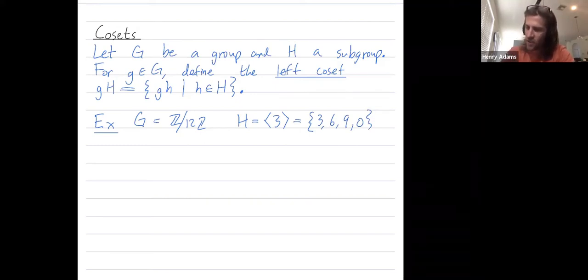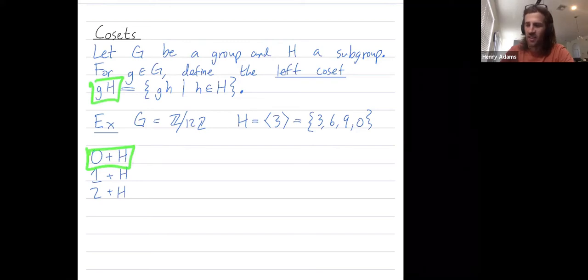In additive notation, G is written as G plus H instead of G times H. This is an additive group, so I'll have cosets that look like 0 plus H, 1 plus H, or G plus H—using G plus the subgroup H instead of G times the subgroup H.